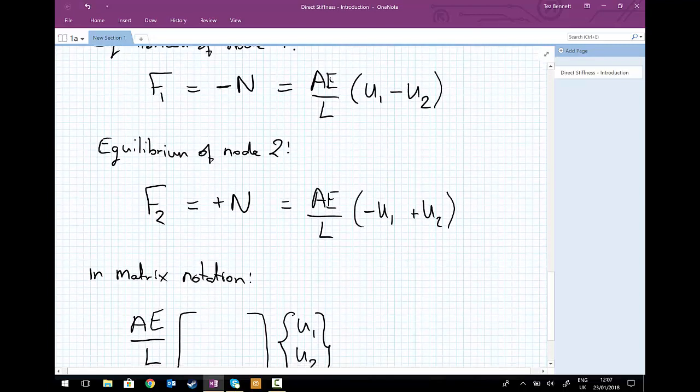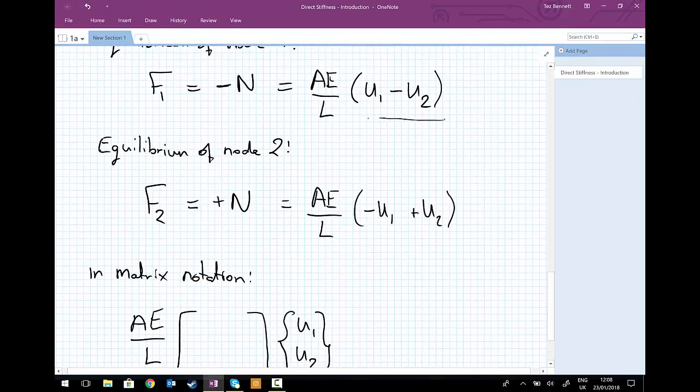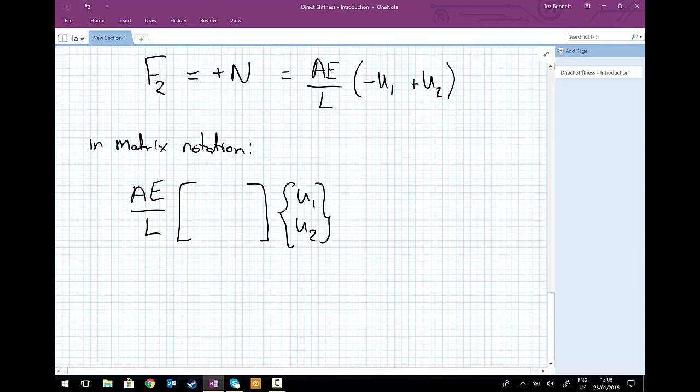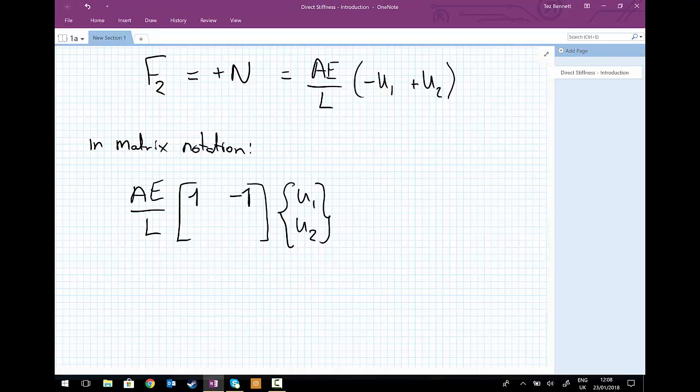We want a plus U1 but a minus U2. So a plus U1 but a minus U2. And for our second equation for F2, we're going to have a minus U1 but a plus U2. And our right hand side becomes the force F1 and the force F2.